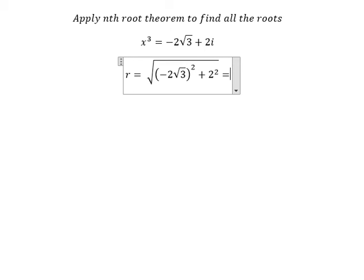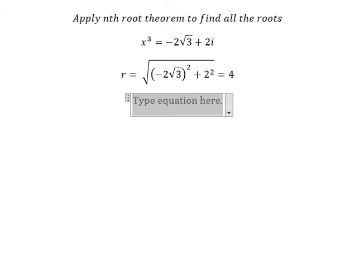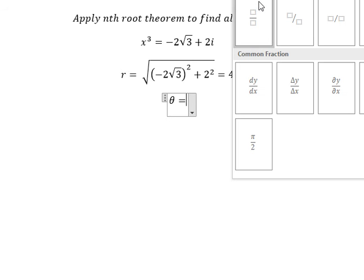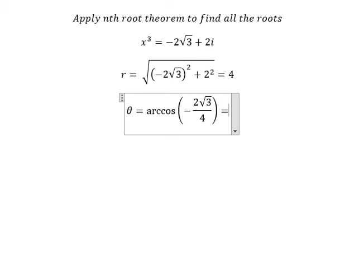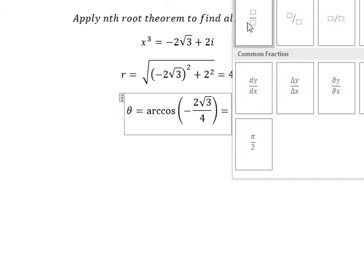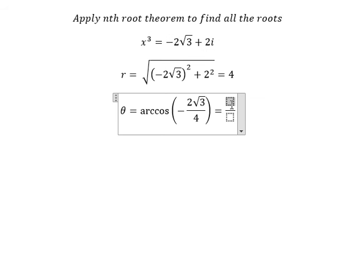Later we need to find the angle. We will use arccos with this number divided by number 4, which is negative square root of 3 over 4, and that should be about 5 pi over 6.